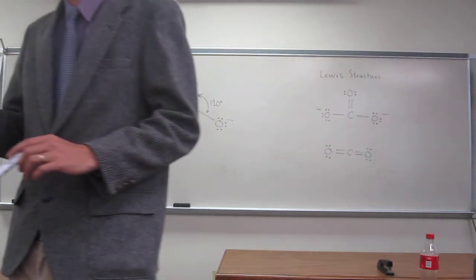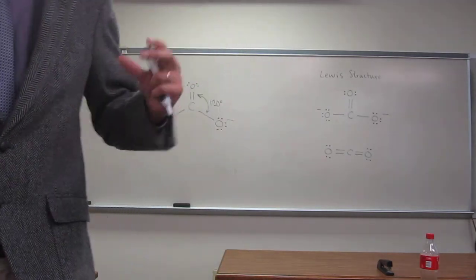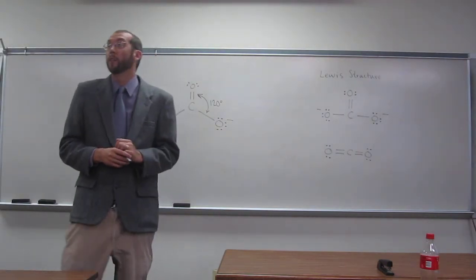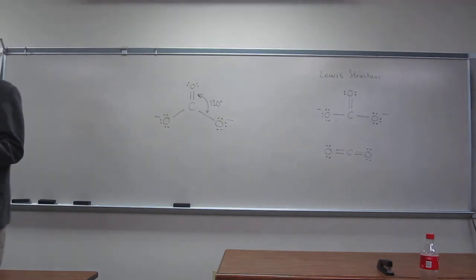Two. So what's the furthest apart two regions of electron density could get on a sphere from each other? 180 degrees.